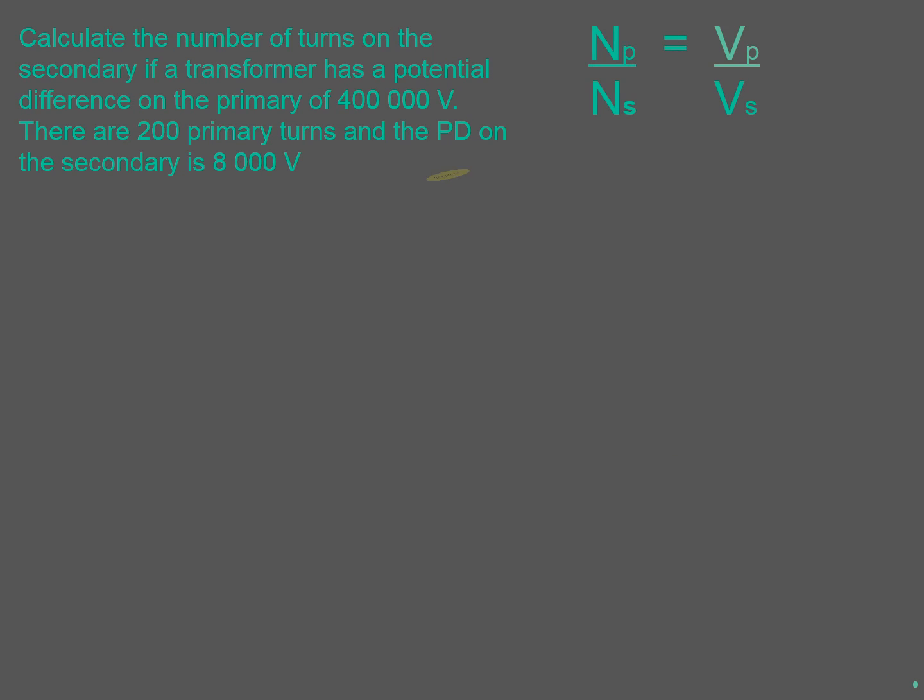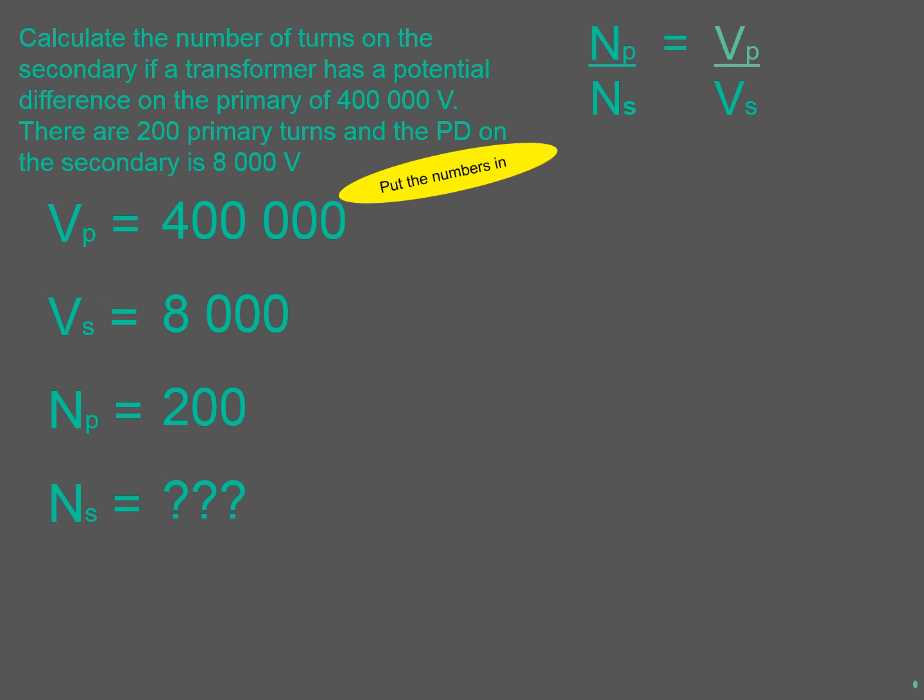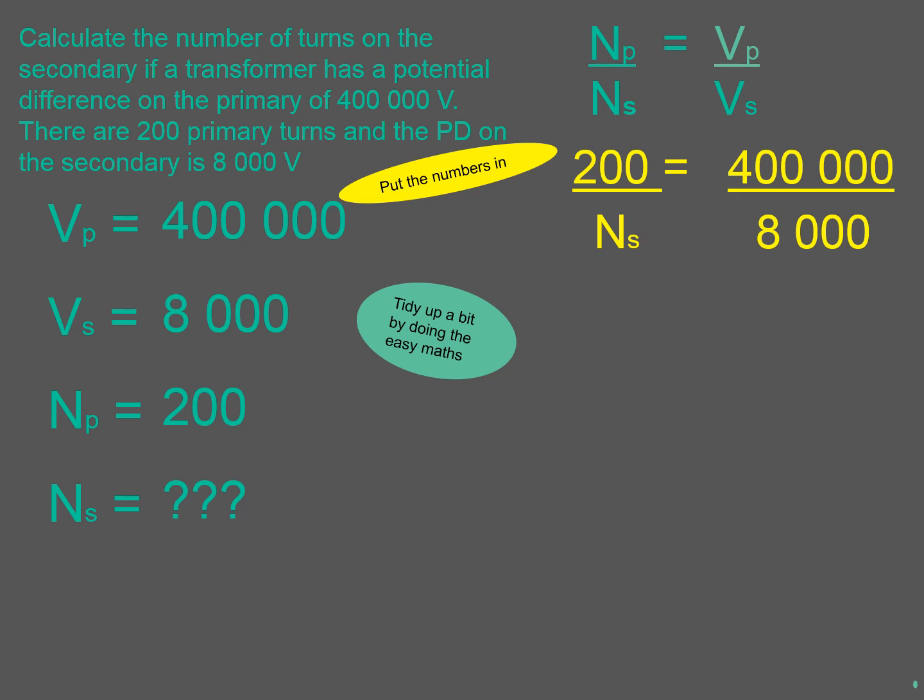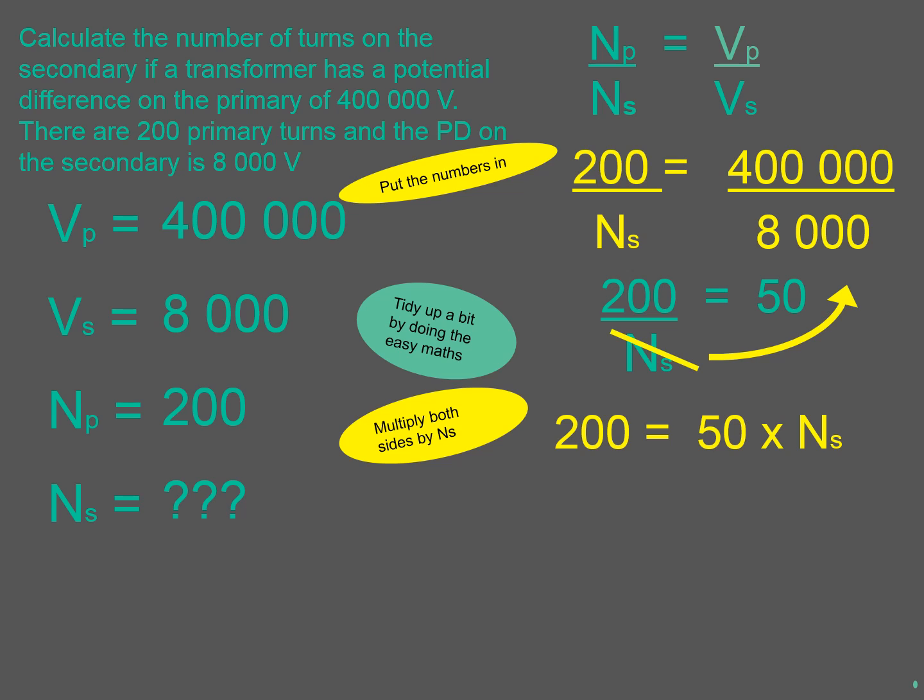One last one. Getting the information from there again. Find it out. Find out what VP is. Find out what VS is. NP. NS. Tidy up. The NS needs to be at the top. It needs to be at the top of the equation. So multiply through by NS. Take it to the top. And there we go. NS. The number of turns on the secondary is 4.